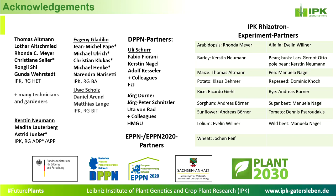Thank you very much, Marcus. There is already a question in the chat: the distance between the risotrons is about 10 centimeters. The second question from Rick is: what is the pixel-to-millimeter resolution of the system? We have a 10-megapixel camera and the 60 by 90 centimeters should be 540,000 square millimeters — so 10 million pixels for 540,000 square millimeters — but we can do the math later on.